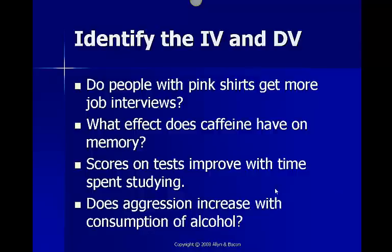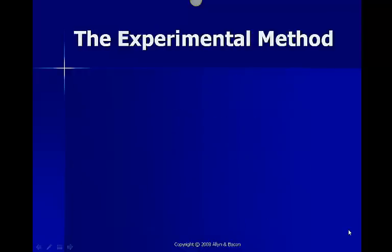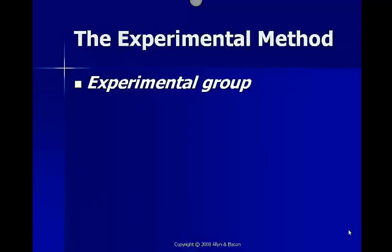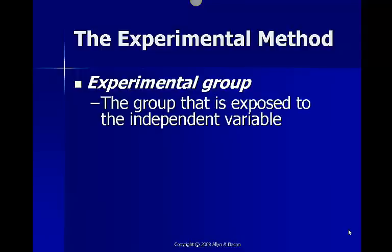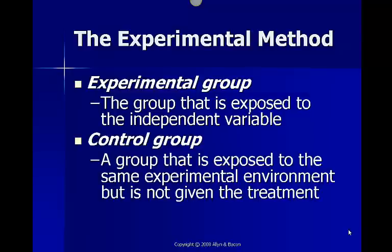If you have not yet, there's a very interesting study in chapter one concerning this topic. We also have two different groups within the experimental method. The first is our experimental group — this is the group that is exposed to our independent variable, so they receive the treatment. Our control group is exposed to all the same experimental environment, but they are not given the treatment. The only difference between our experimental and our control group is that our experimental group gets the treatment, or the independent variable. The control group does not.